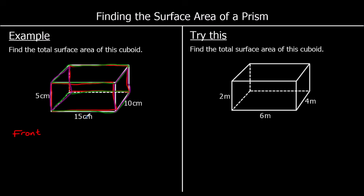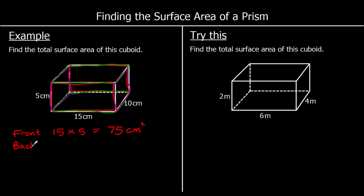For the front, we've got a rectangle which is 15 by 5. So 15 times 5 is 75, so the area of the front is 75cm squared. The back is identical, so the area of the back is also 75cm squared.